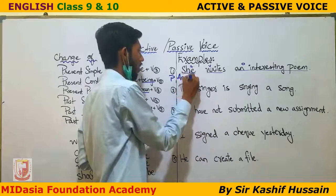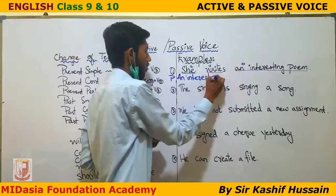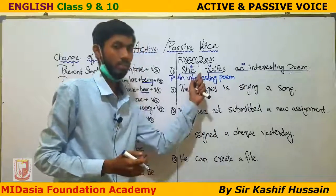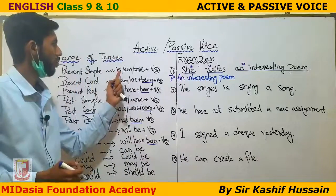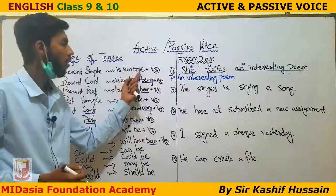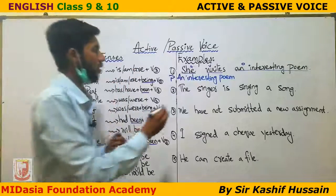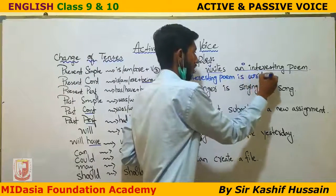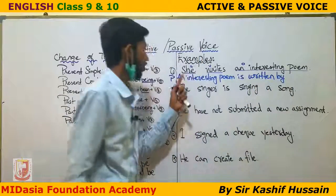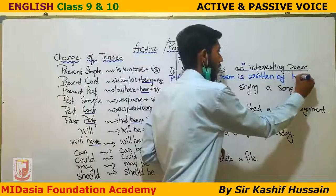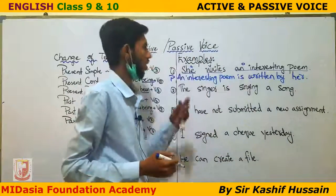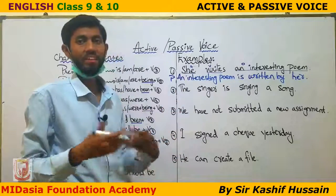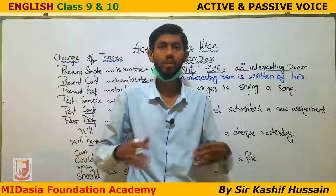First, take the object: 'an interesting poem.' This is present simple tense, so we use the helping verb 'is' plus the verb's third form. 'An interesting poem is written by her.' Notice that in passive voice we change subject pronouns — 'she' changes to 'her', 'we' changes to 'us', 'I' changes to 'me', 'he' changes to 'him', 'they' changes to 'them'. 'It' and 'you' don't change, and names don't change either.